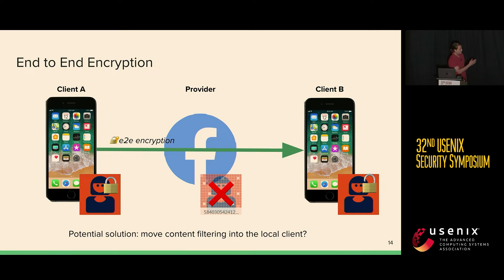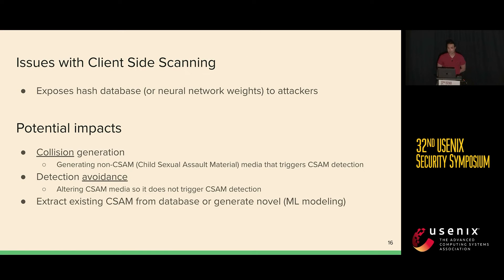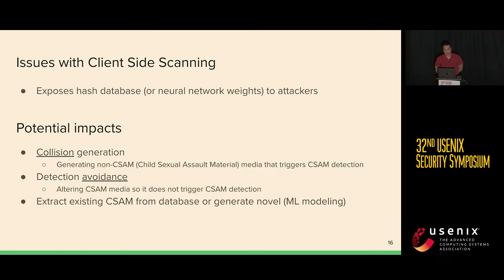One potential solution to this problem is to move the monitoring onto the local client. The app that you're sending on, Facebook Messenger, can run the content scanning locally and only send the image to the server when there is an actual detection or match. But there are some problems here. Primarily, the main issue is that the hash database and/or the algorithm is now stored locally, and a skilled reverse engineer can pull these things off of the device. This can lead to many bad things, including generating two images which look completely different to a human but hash the same, perturbing images to avoid detection and send illicit material, or even reconstructing the original material that the database was derived from, or generating novel images using LLMs trained on these hashes.